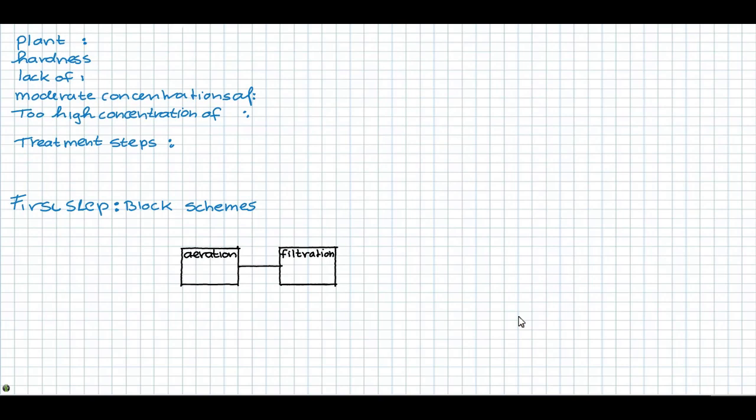In this example, we are going to design a plant of 1000 cubic meter per hour.